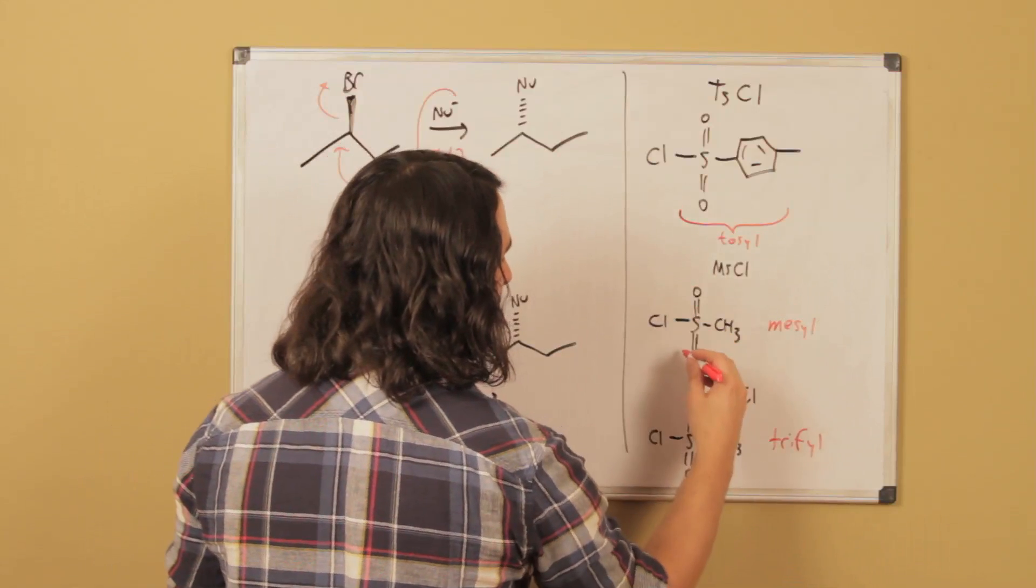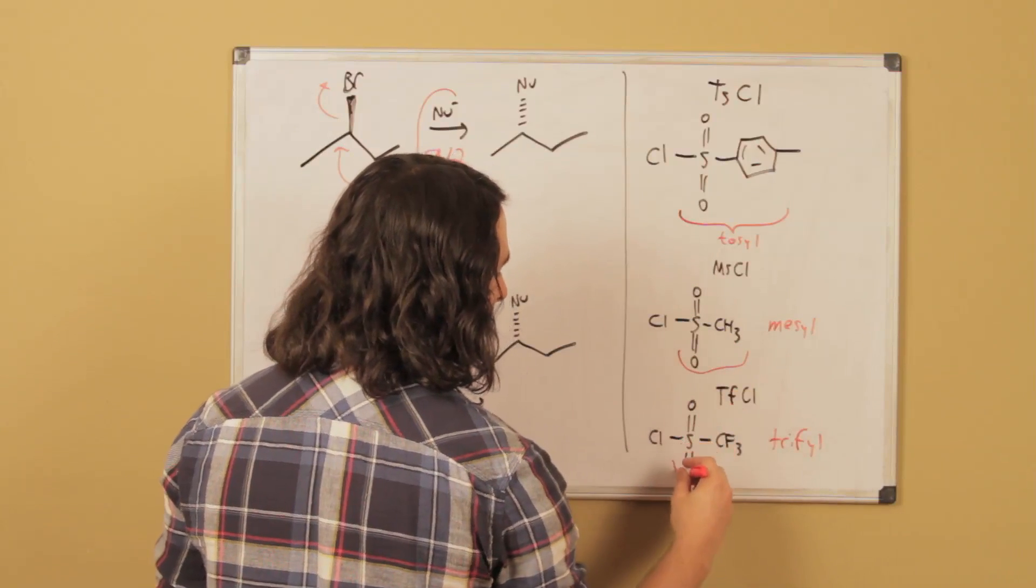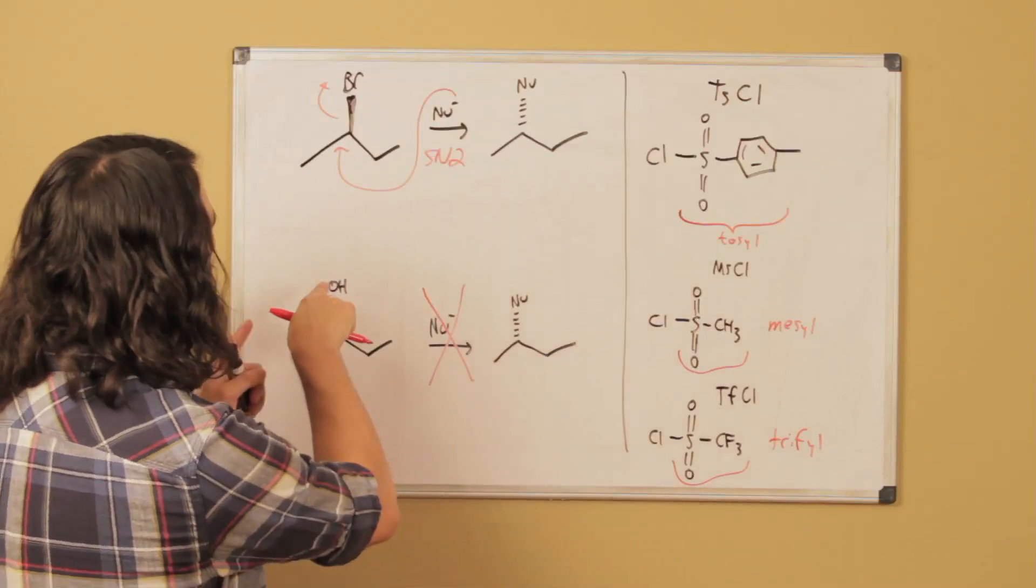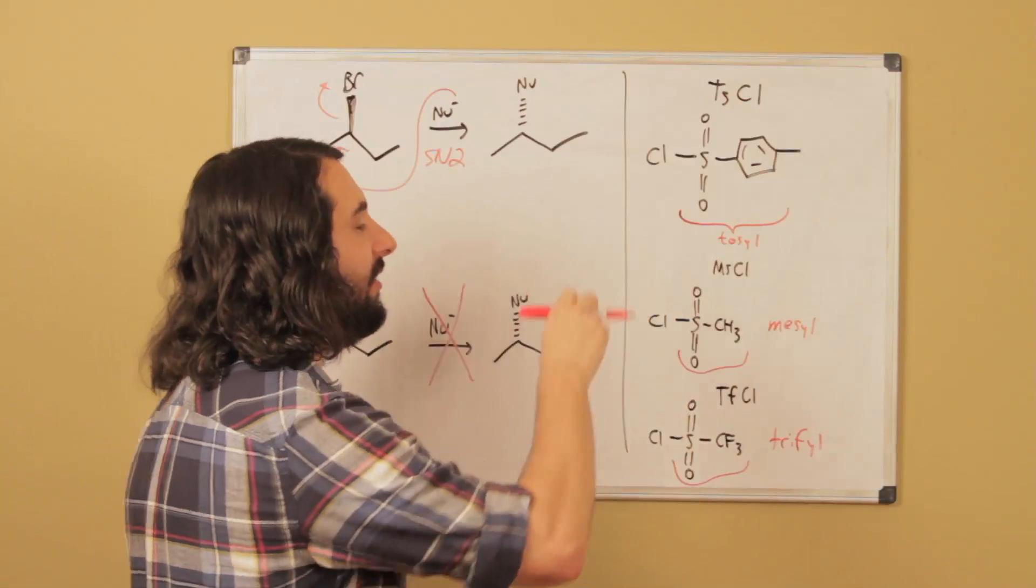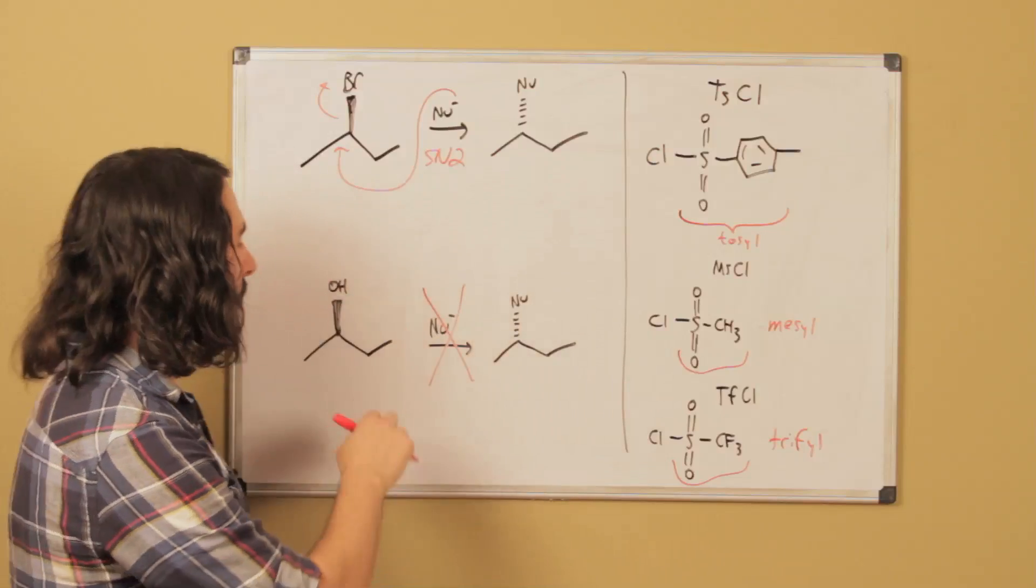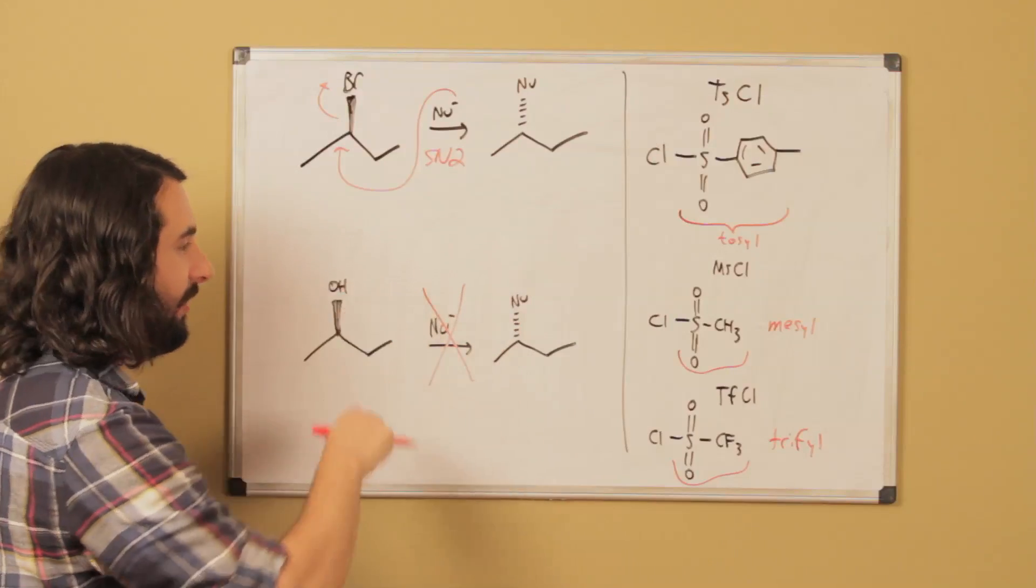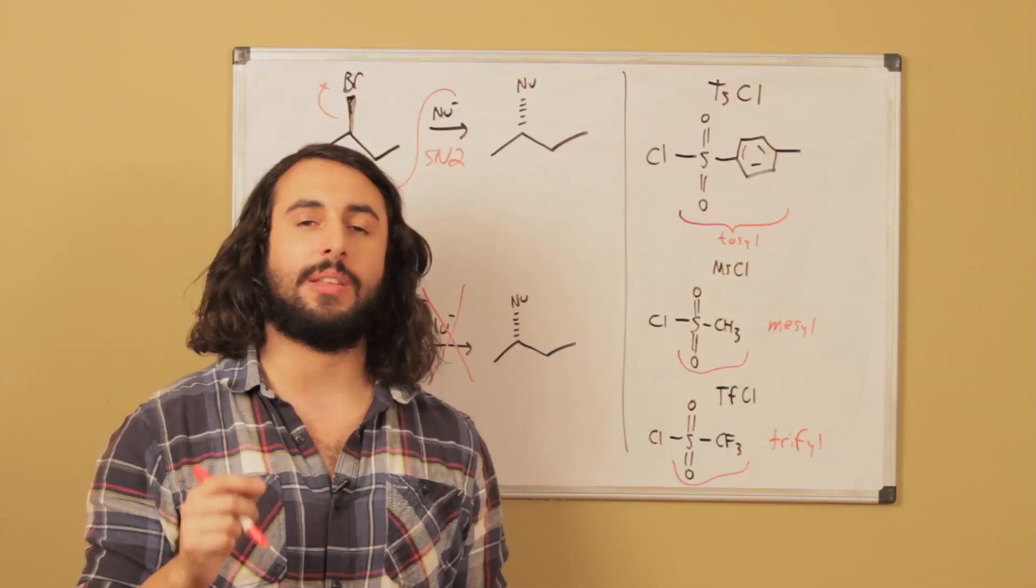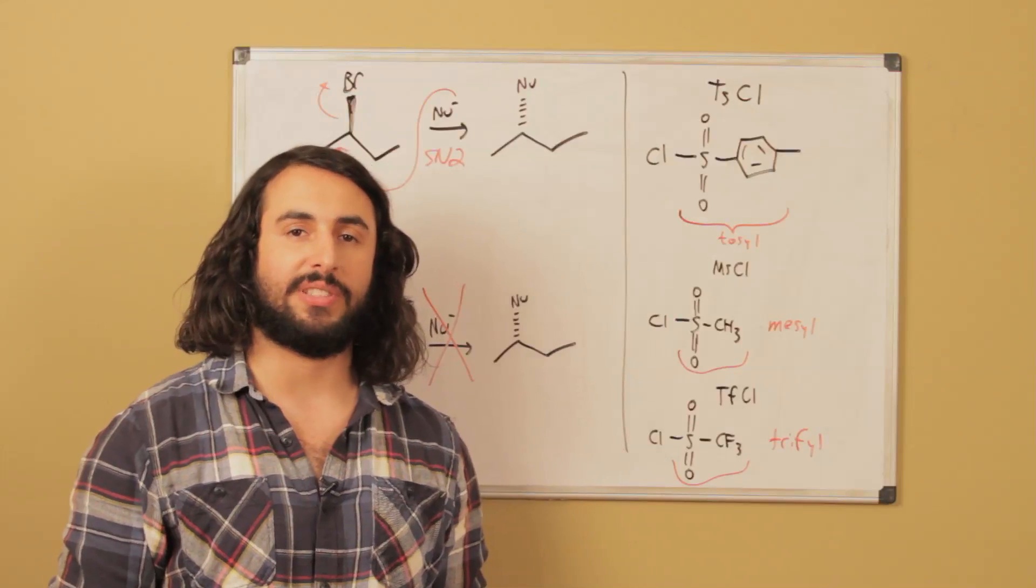Or mesyl chloride - this is the mesyl group right here. And then this is the triflyl group right here. Reaction of an alcohol with any of these will turn this into a leaving group derivative. So let's go ahead and take a look at the mechanism for that and then see why exactly it works that way.